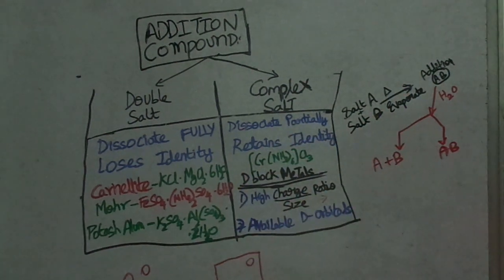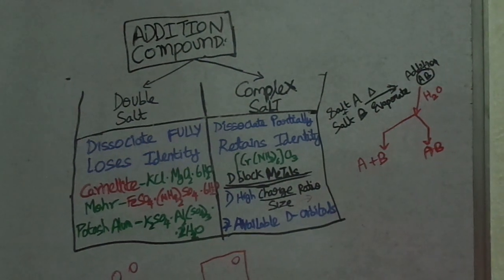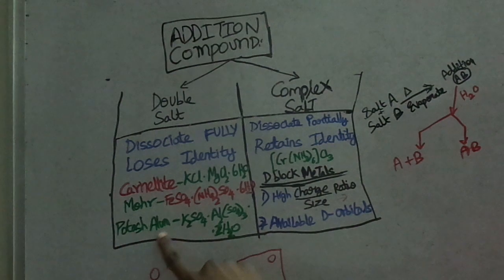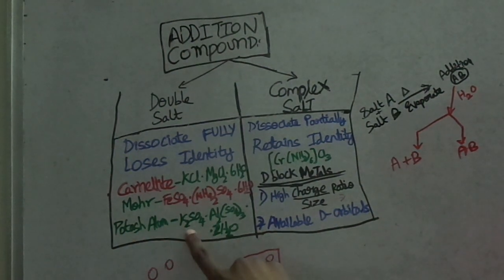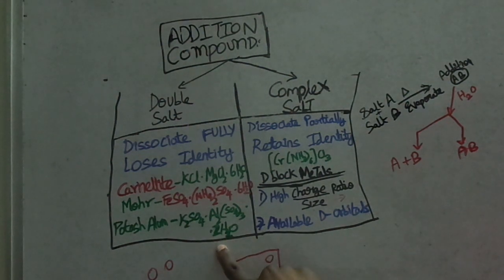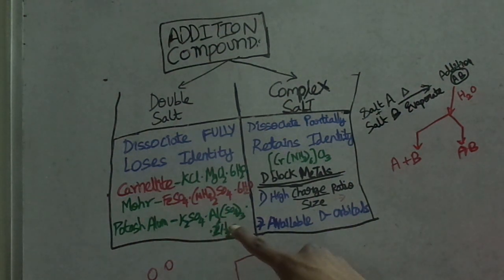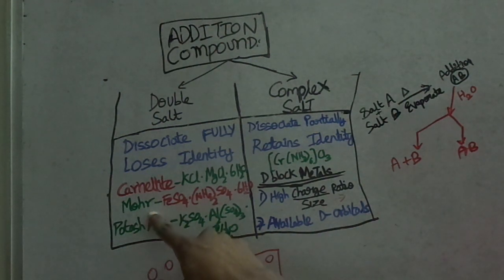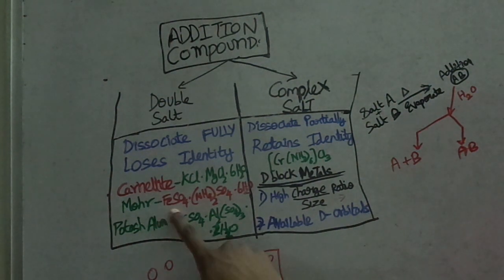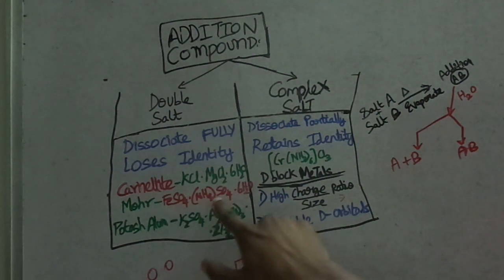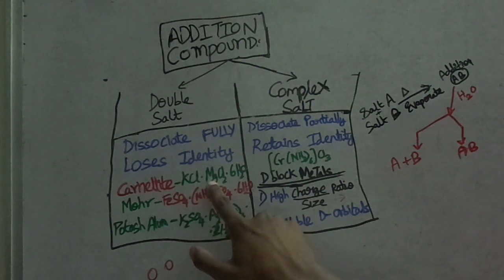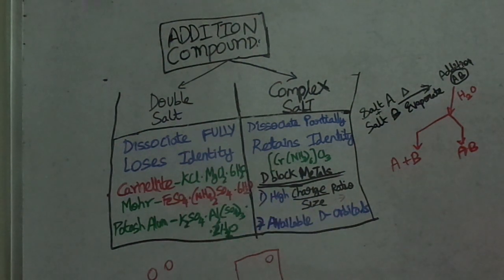Let us look at the double salt examples. Carnallite, Mohr's salt, and Potash alum. Potash alum is potassium aluminium sulfate 12H₂O. Mohr's salt is FAS — ferrous ammonium sulfate 6H₂O. Carnallite is potassium magnesium chloride 6H₂O.